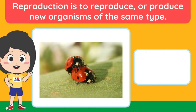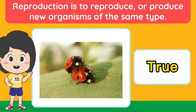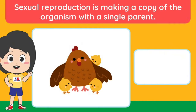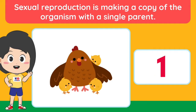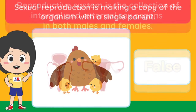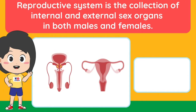Reproduction is to reproduce or produce new organisms of the same type. Sexual reproduction is making a copy of the organism with a single parent. The reproductive system is the collection of internal and external sex organs in both males and females.